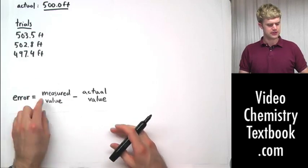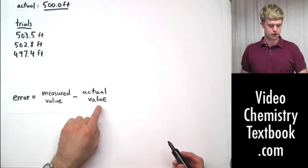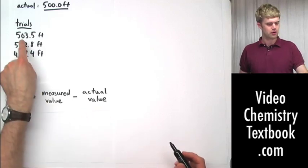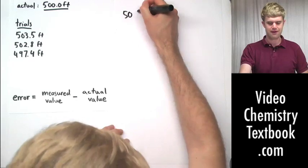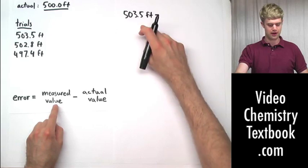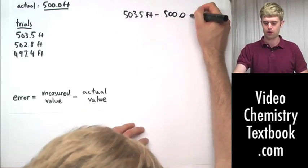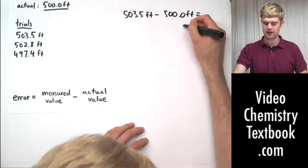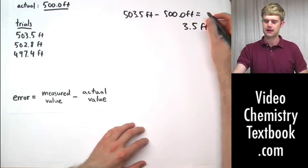Error here is defined as the measured value minus the actual value. It's not a particularly tricky equation. So let's go right ahead and look at this first number that we have here. So 503.5 feet, that's our measured value, minus the actual value, which was 500.0 feet, is going to give us 3.5 feet as our error.